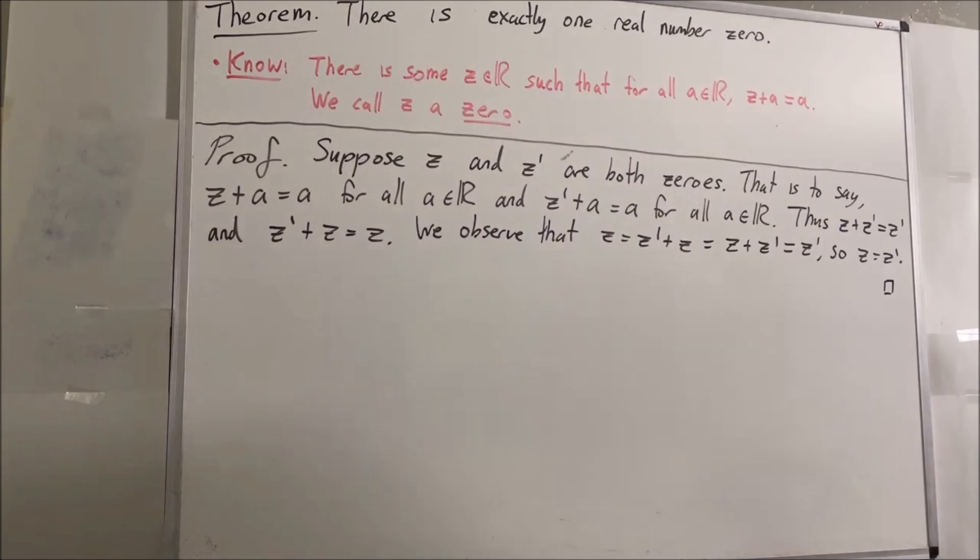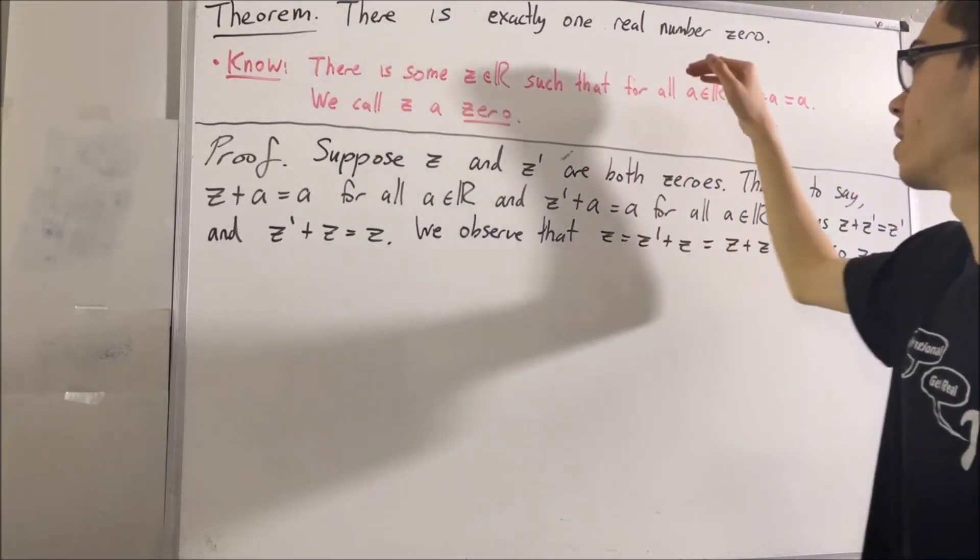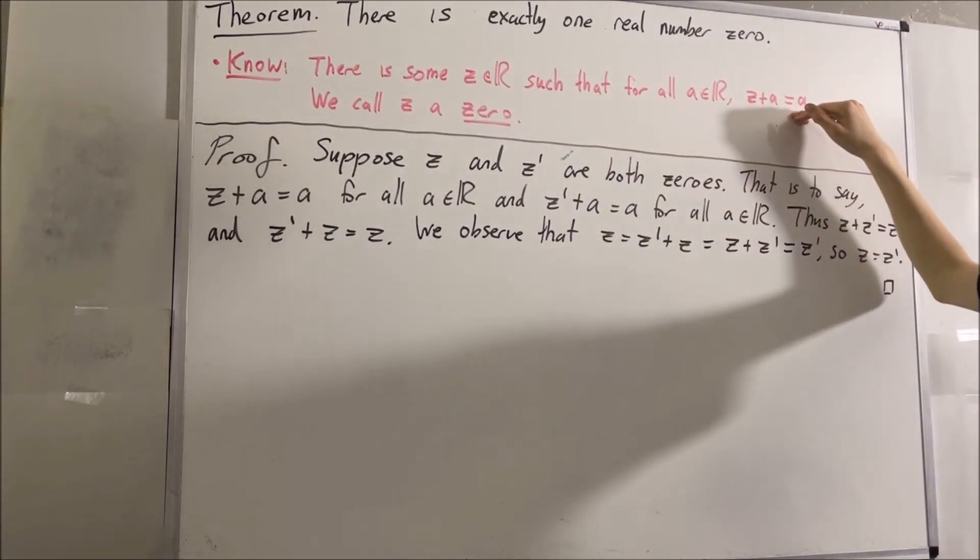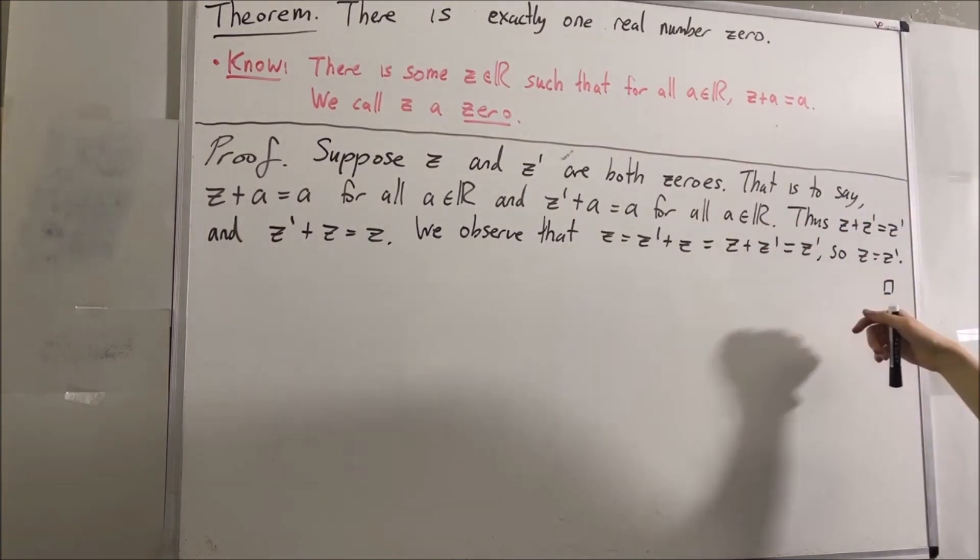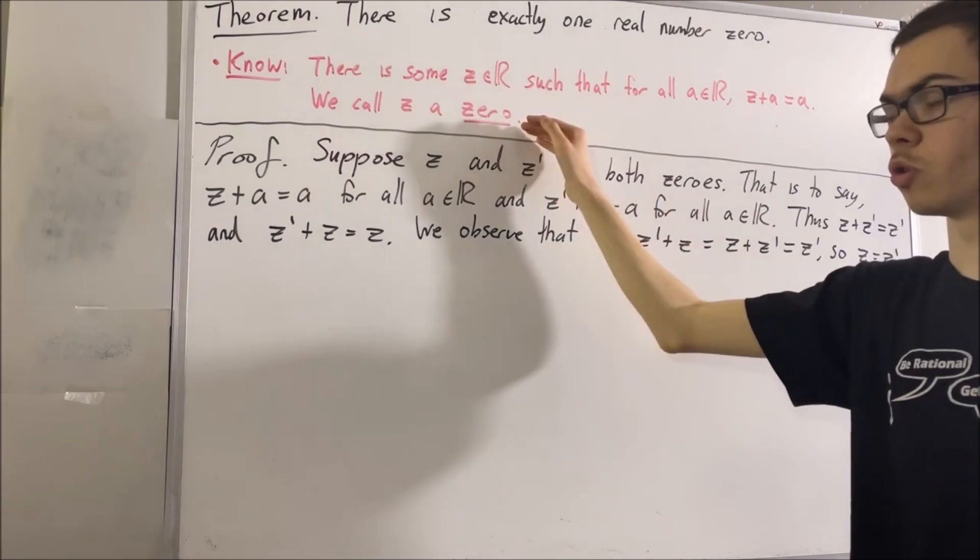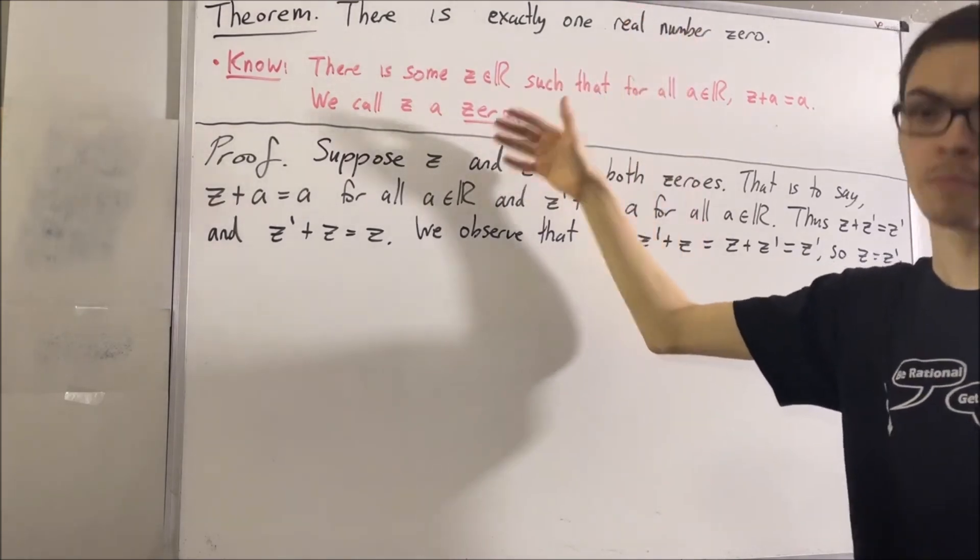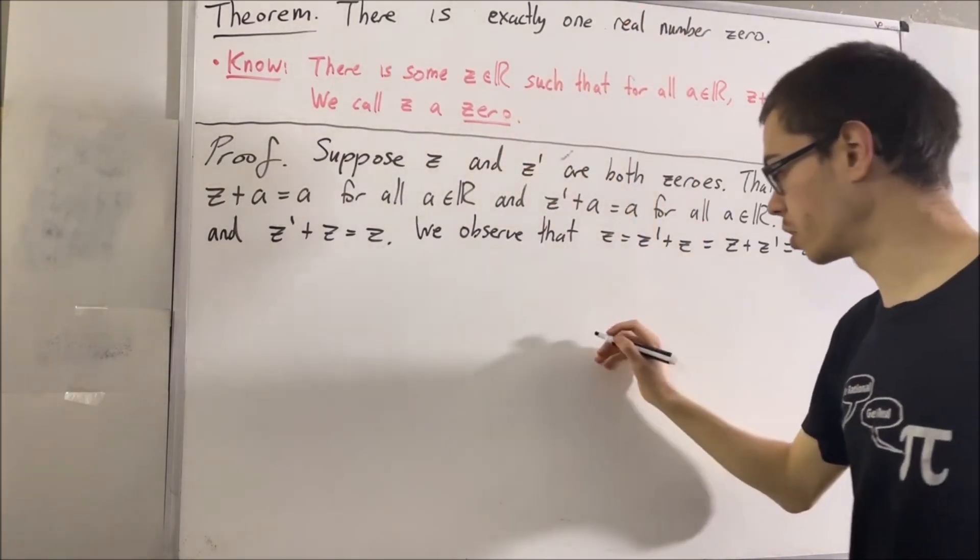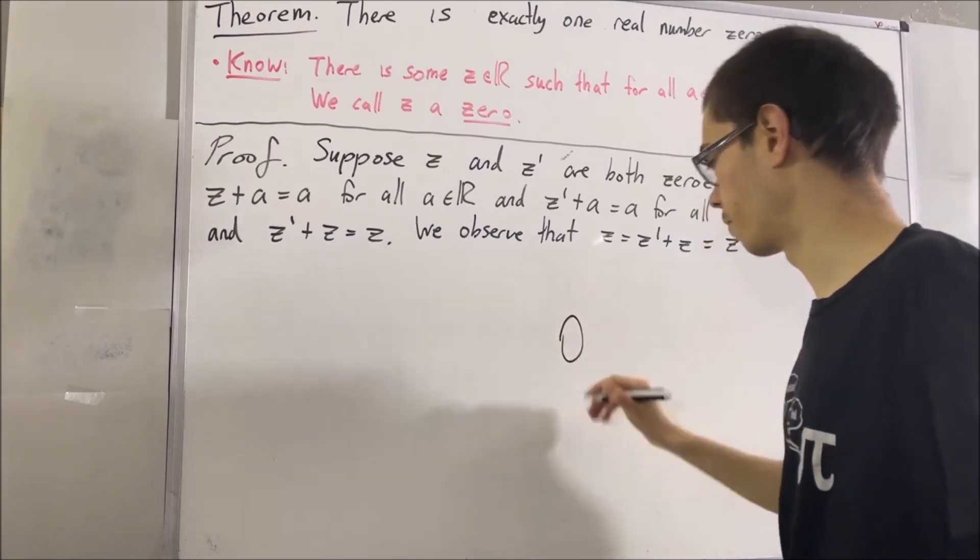There's exactly one real number that satisfies the statement. That's what we've proven here. And so instead of saying we have a number zero, we'll say that we have the number zero. And we'll denote the number zero like this.